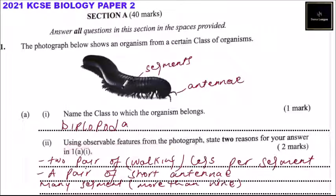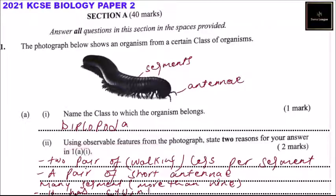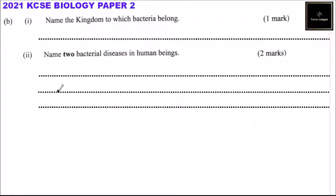Another feature you can observe is that the organism or myriapod has a cylindrical body. So you can also mention that it has a cylindrical body. That is another feature of the myriapod, which we have said belongs to the class Diplopoda.